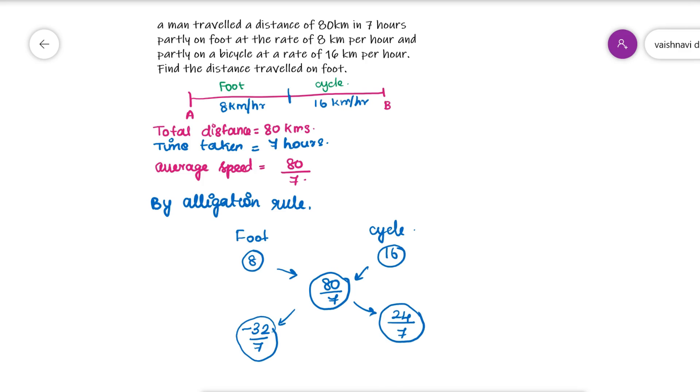Therefore, the ratio of both the things, foot and cycle, is 32 by 7 to 24 by 7. You need not worry about the negative sign. You can omit it.